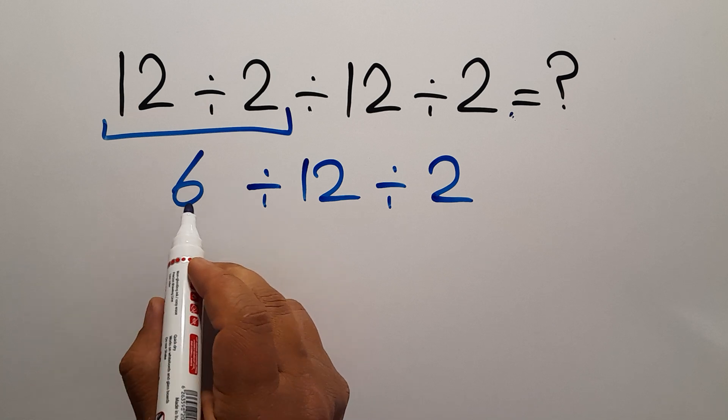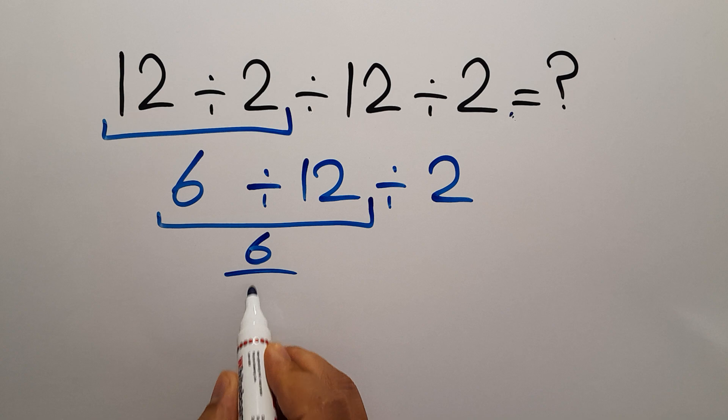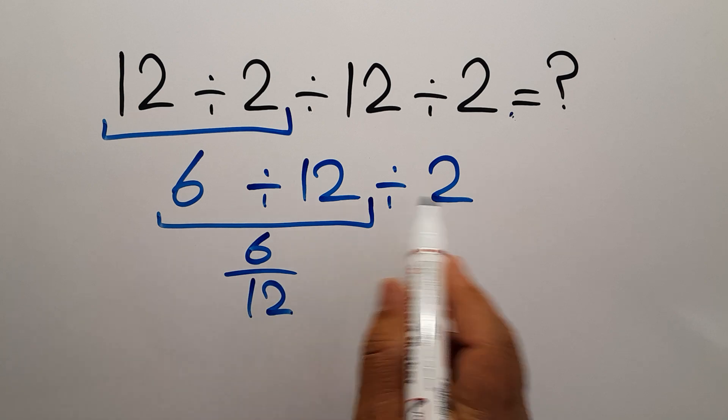6 divided by 12 can be written as 6 over 12, and here we have divided by 2.